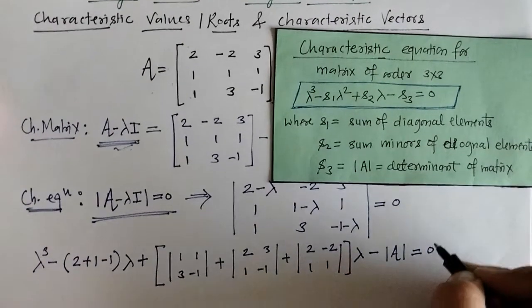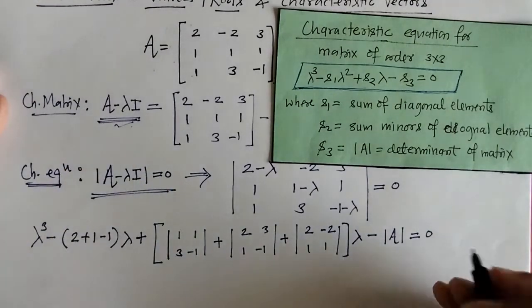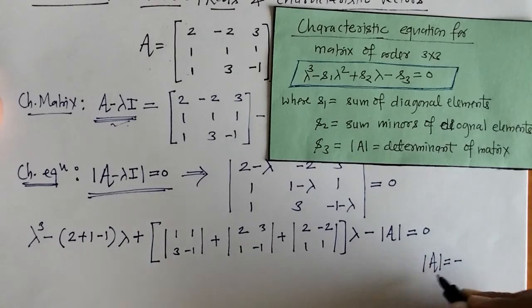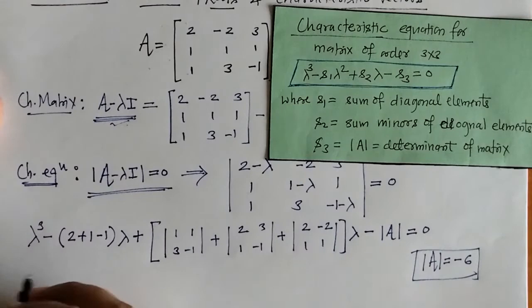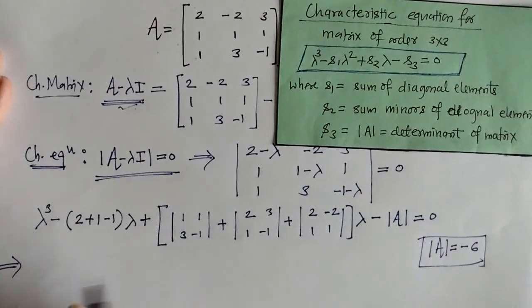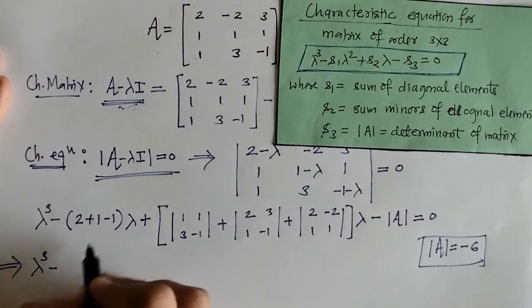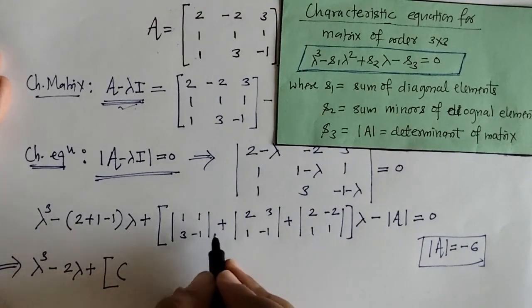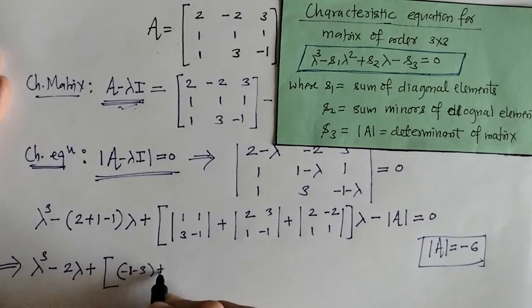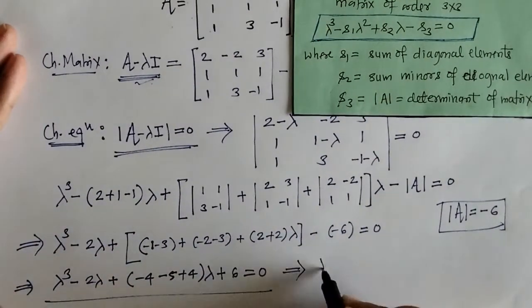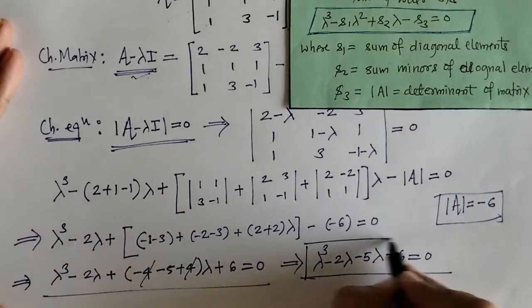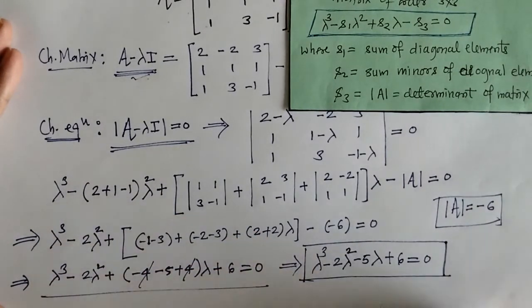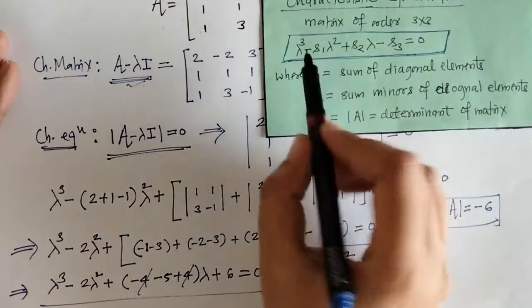We can find the determinant of this matrix; when we solve, we get the value of det(A) equal to minus 6. Putting this value in and simplifying, we get the characteristic equation. We simplify each term — including the second-order determinants for S2 — and we get the characteristic equation with lambda squared terms included.